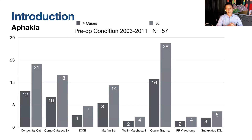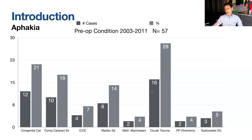Looking at the causes of secondary IOLs, a review of my patients between 2003 and 2011 — 57 cases — showed the most common cause was ocular trauma, followed by congenital cataracts, complicated cataract surgery or complicated pseudophakia, then subluxated lenses through Marfan syndrome or Weill-Marchesani, intracapsular extraction, vitrectomy, and subluxated IOLs. Reviewing causes between 2011 and 2023, the most common cause was again ocular trauma, followed by vitrectomy and complicated cataract surgery.